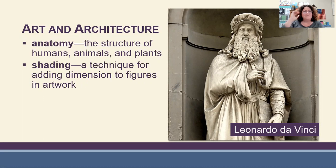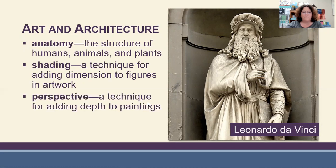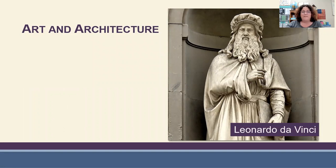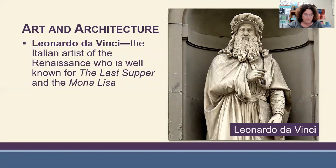Some of the ways that artists painted or sculpted changed. They started using anatomy — the structure of humans, animals, and plants — to better paint things. They began using shading, a technique for adding dimension to figures and artwork, and perspective, a technique to add depth to paintings. All these made paintings look a lot better than in previous years.